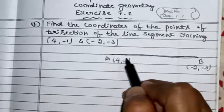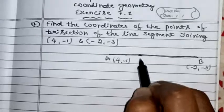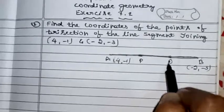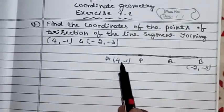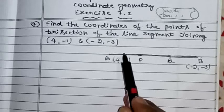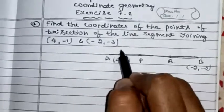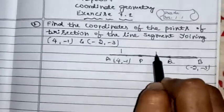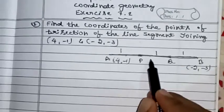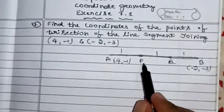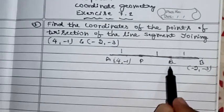Let me mark the two points here. Let me call this one P and this one Q. So the line segment AB is divided into three parts — first, second, and third — by trisection. Therefore these three parts are equal: AP = PQ = QB. You need to find the coordinates of P and then the coordinates of Q.